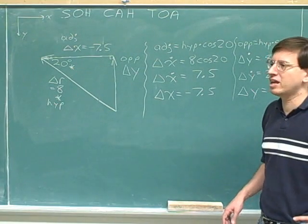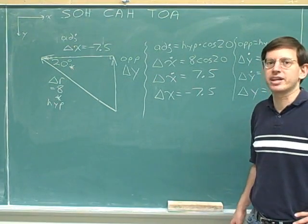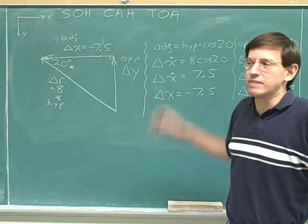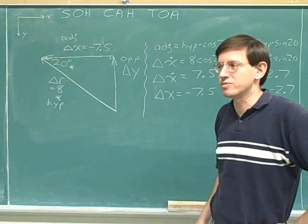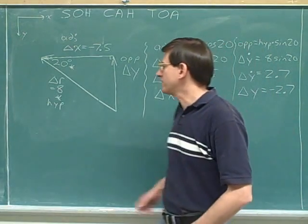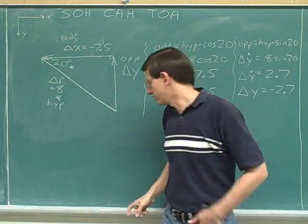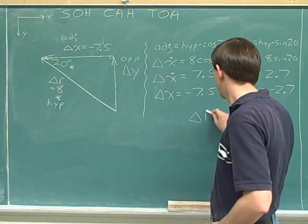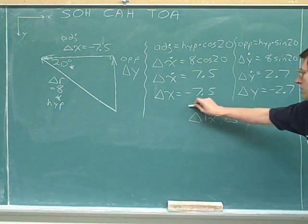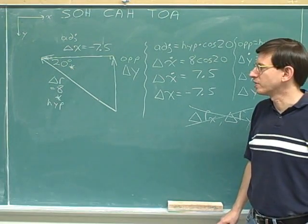Getting the signs right is critical. If you're getting everything right except the signs, you're really missing the point — especially since these are relatively simple problems. One key thing we learned here is the convention for displacement: the overall displacement is delta R, the X component is delta X, and the Y component is delta Y. It would seem logical to use delta R sub X and delta R sub Y, but those are not the conventional symbols. These are the symbols used, and now is a good time to learn them.